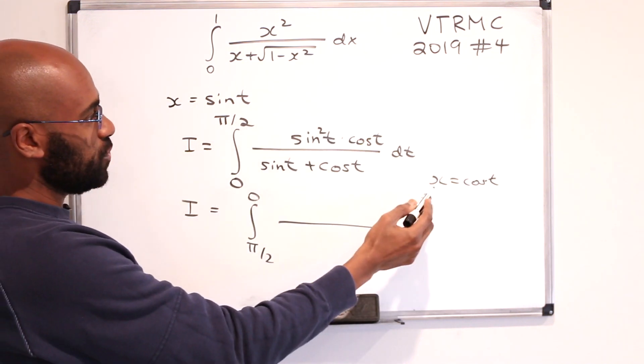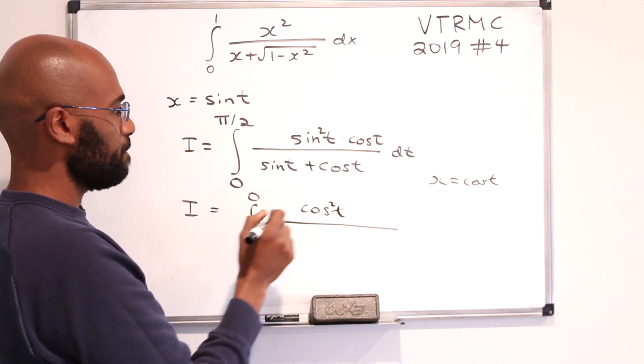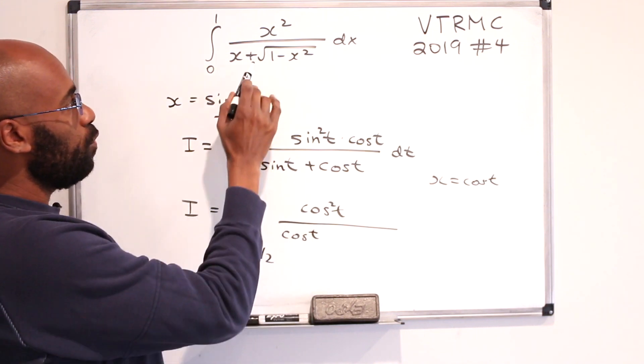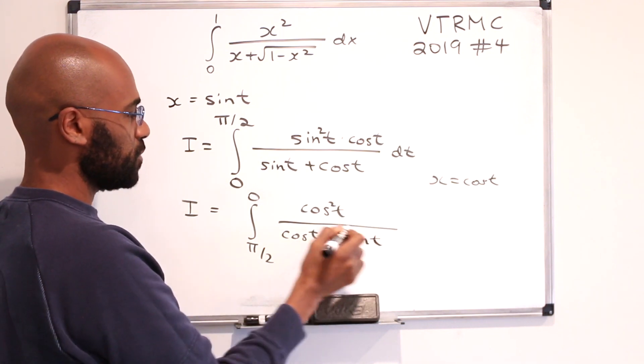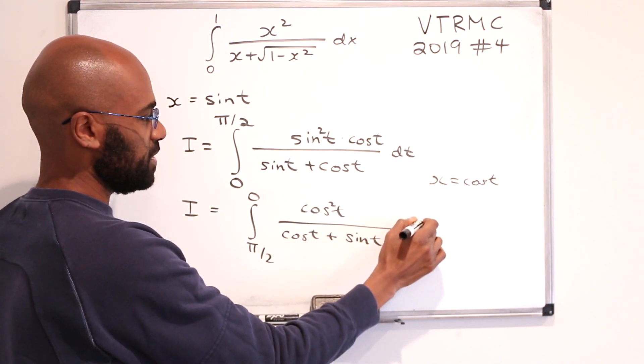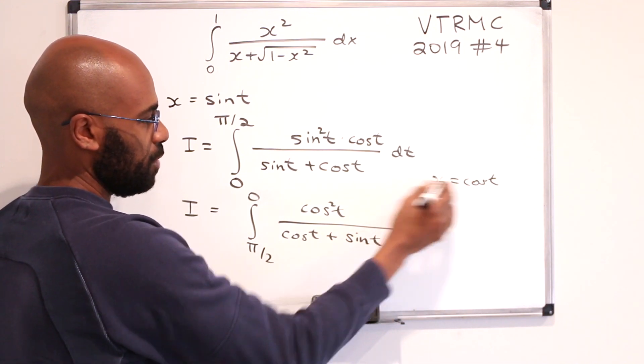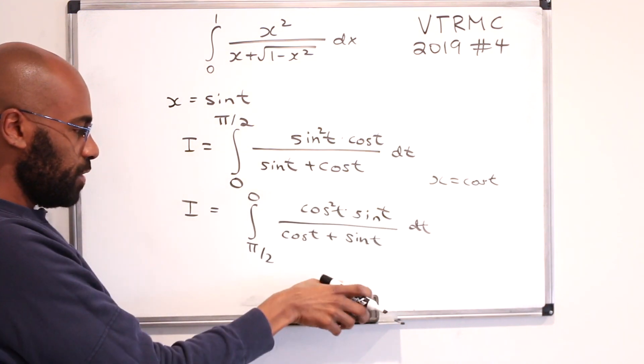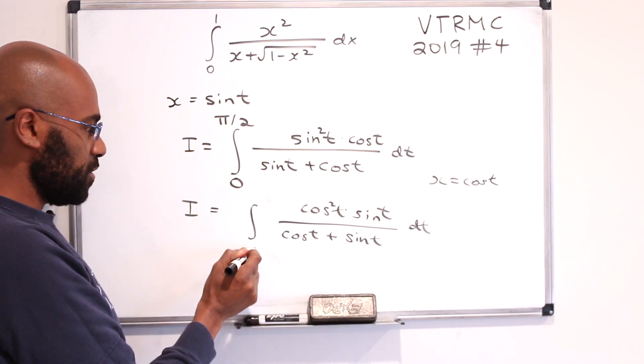Now, if we actually do the substitution, on the numerator we get cosine squared t. And then we have a cosine t here. The square root of one minus cosine squared is sine squared, so we get sine t. And we'll have dt. But we need to differentiate with respect to x to do this substitution. We'll get negative sine. I'm going to write just sine. The negative will actually switch the bounds of this integral to be zero to pi over two.